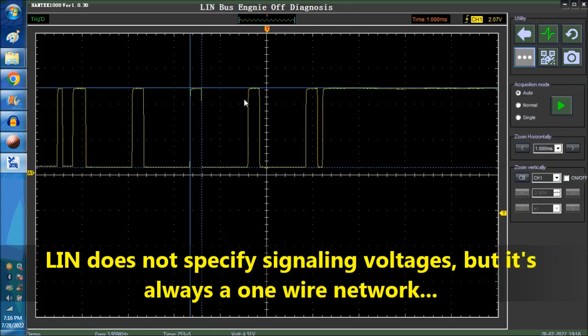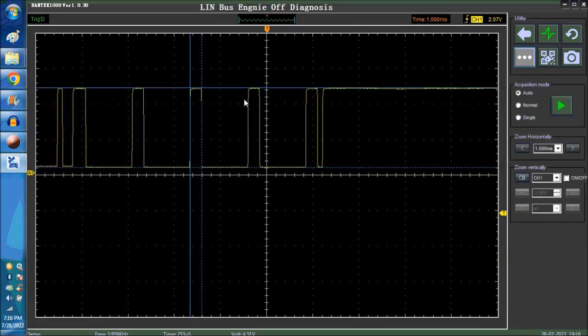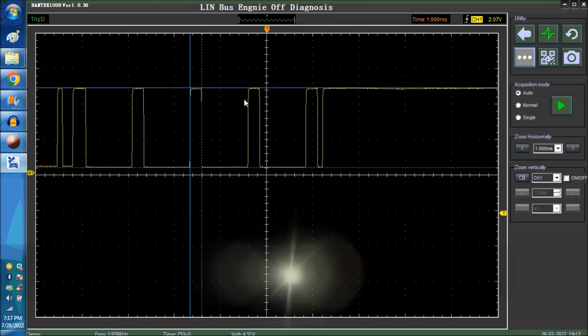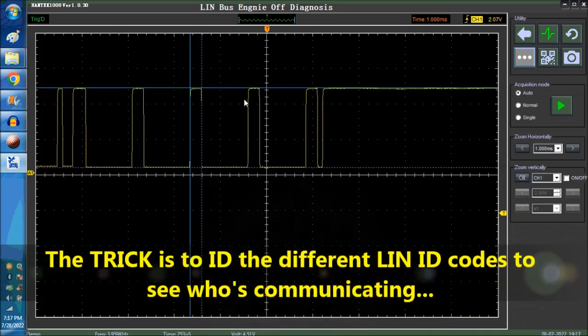If you want to get yourself a software and a little gadget to play around with the LIN, you're going to have to decode to see who's communicating because all the modules have a different ID. And it's really beyond your needs as an automotive technician. Even if you're a do-it-yourselfer, it would be nice to know, but it's impossible to know all these.